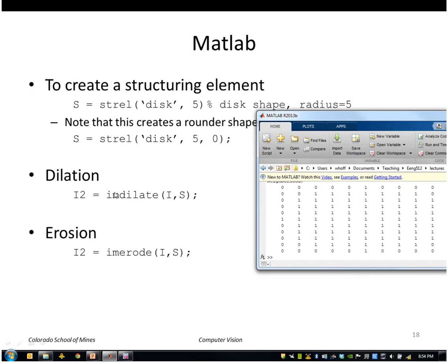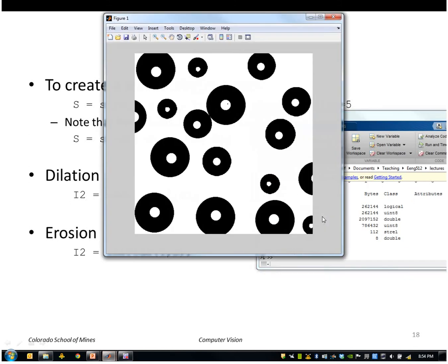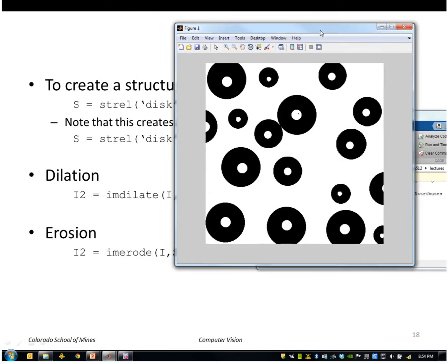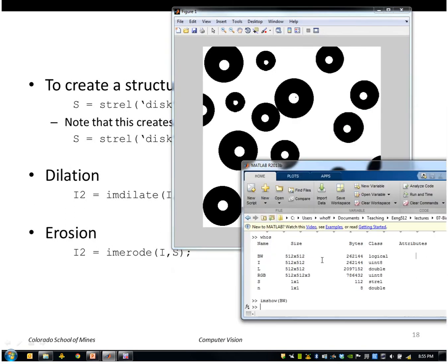So to apply a dilation we use imdilate and I still have the binary image here which is that guy. So I'll call imdilate on that using that structuring element S that I just showed you.